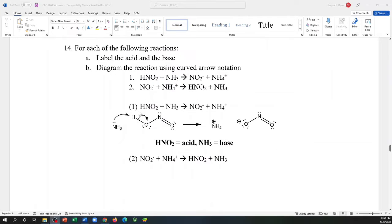In the first reaction, the base is ammonia. It's acting as a base by ripping a hydrogen off of nitrous acid to produce ammonium and nitrite. I've identified the acid and the base here in this reaction.